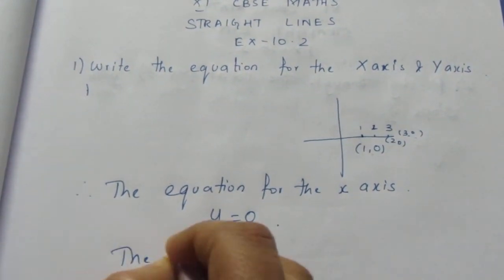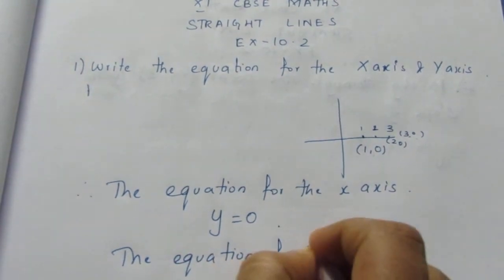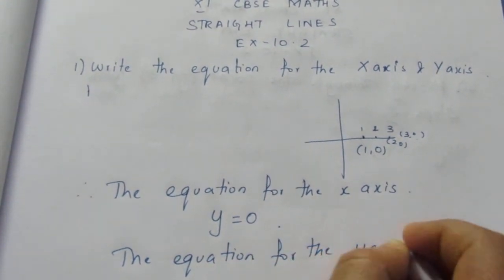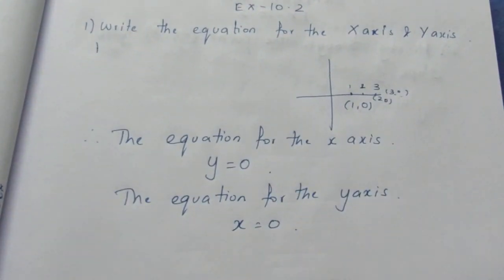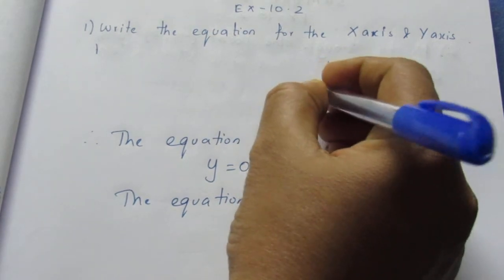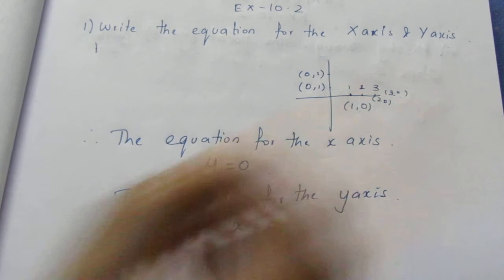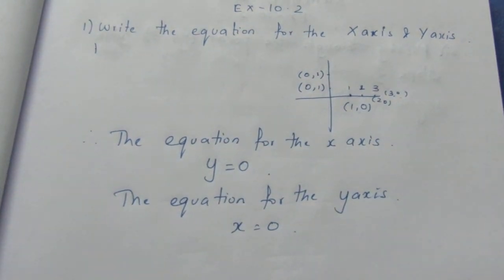The same way, the equation for the y-axis is x = 0, because all the values on the y-axis will be (0,1), (0,2), and so on. So if we plot the points, all the x coordinates will be 0.